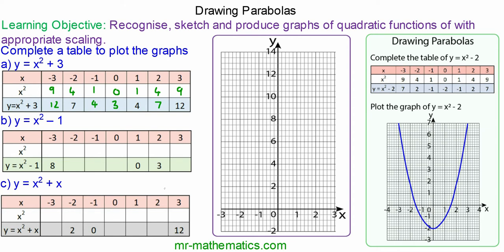So now we can plot these coordinate pairs at negative 3 and 12. When x is negative 2, y is 7. When x is negative 1, y is 4. When x is 0, y is 3.